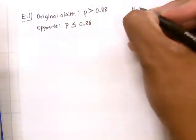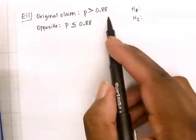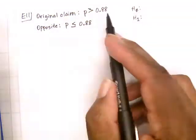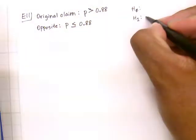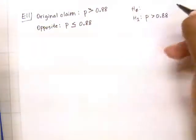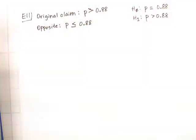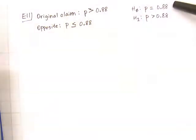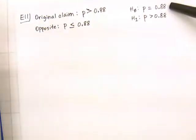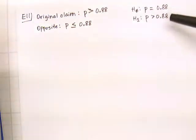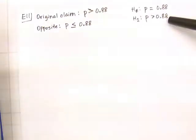Writing the null and alternative hypothesis: the alternative hypothesis has either less than, greater than, or not equal to. Here the original claim becomes the alternative hypothesis: P > 0.88. The null always has the equal sign, so it will be P = 0.88. In words, the null hypothesis states that the percentage of adults who have a job is equal to 88%, and the alternative states it is greater than 88%.